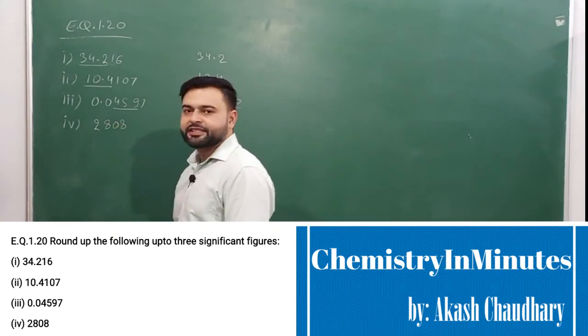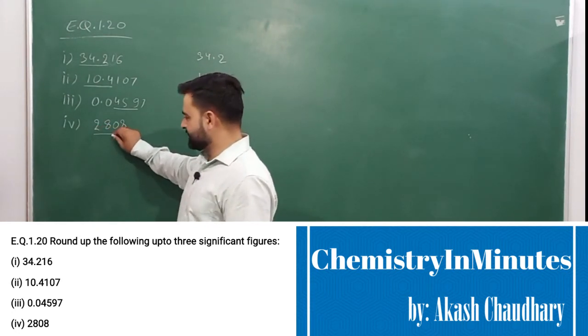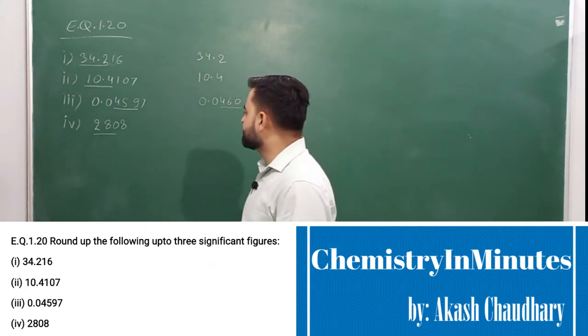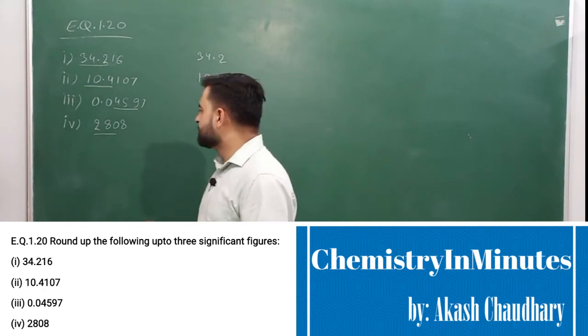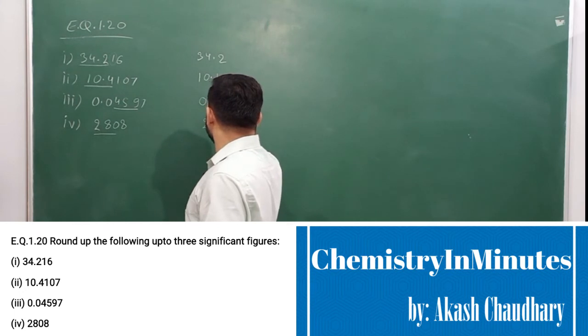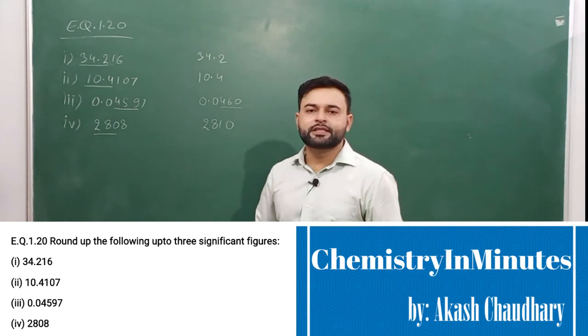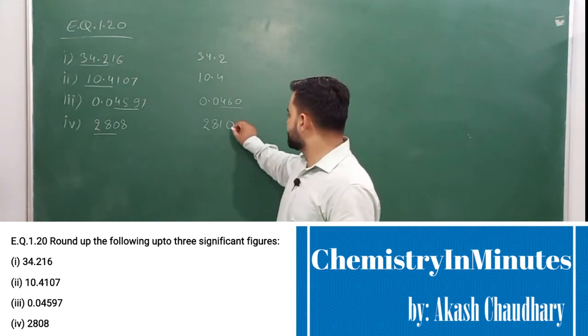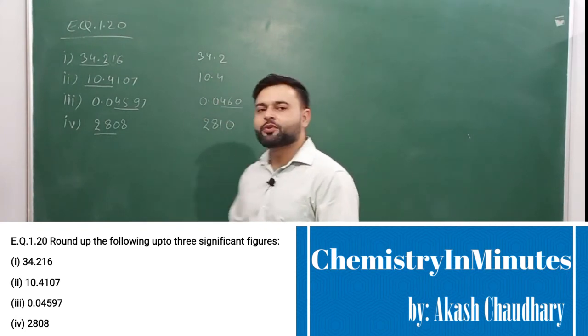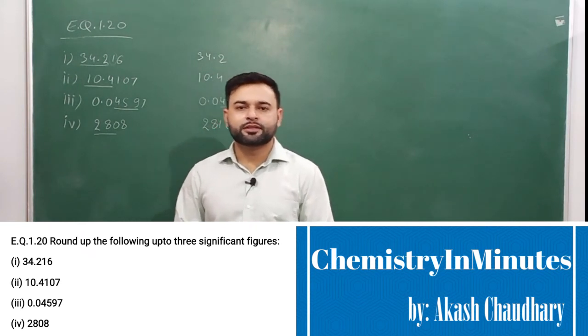The number 2808 here, the digit, 3 significant digits will be up to this 0 and this 8 has to be dropped, which is again greater than 5. So we have to increase 0 by 1. It will be 2810. This number will be containing 3 significant digits because this is the rightmost 0 before the decimal, which is insignificant. This will be the answer to the question.